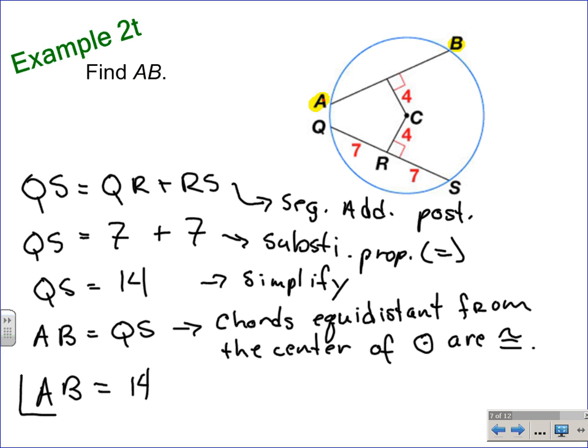Now, that's a very long way and very formal way of finding the measure of segment AB. Mentally, you could probably have done this problem within a couple of seconds, realizing that chord AB and chord QS are equidistant, which means they are congruent, because chords equidistant from the center of a circle are congruent. So, then you find or figure mentally that QS has a measure of 14. Therefore, AB has a measure of 14.